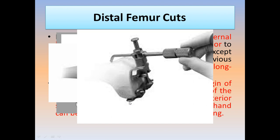If the posterior medial femoral condyle is arthritic and worn down to the same level as the posterior lateral condyle, the sizer will be internally rotated, causing the femoral component to be internally rotated. Any component — femoral or tibial — that is internally rotated or medially translated will affect patellofemoral tracking, ranging from simple subluxation to frank dislocation. Be careful that the posterior medial femoral condyle is intact in its size because all systems' posterior feet rest on it.